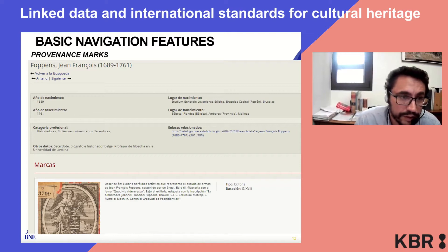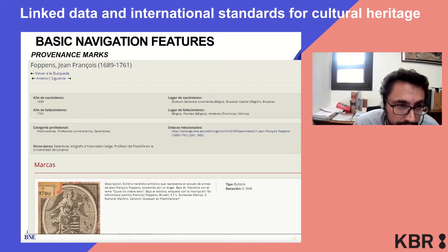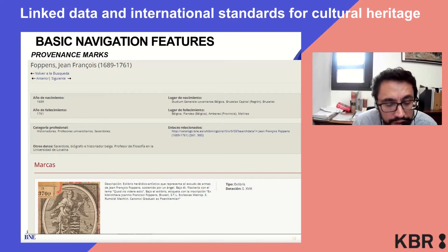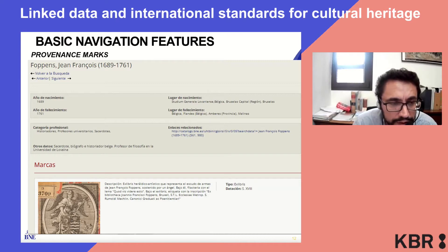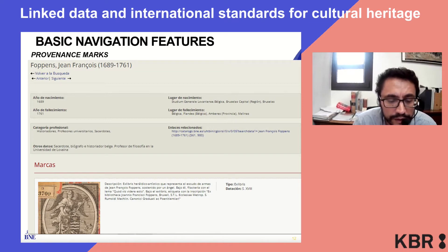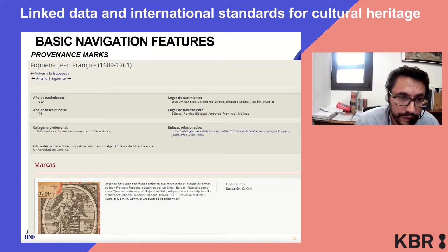This is the provenance marks feature. It is still in beta version as we're still adjusting it — it is the last addition to the model, added last year. It has allowed us to seamlessly integrate a database of marks, provenance, and collectors into the data workflows, and it is shown at the same level as other library resources.